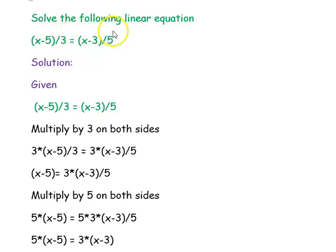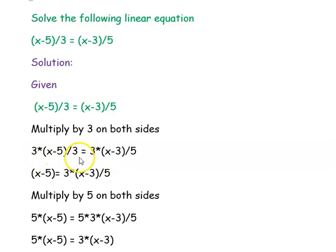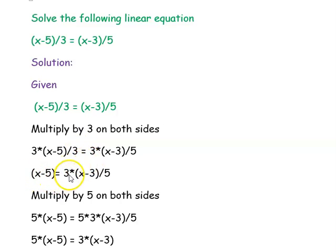Next question: solve the following linear equation — x minus 5 divided by 3 equal to x minus 3 divided by 5. In the first step, we multiply by 3 on both sides. The 3s on the left hand side cancel, leaving x minus 5 equal to 3 times (x minus 3) divided by 5.